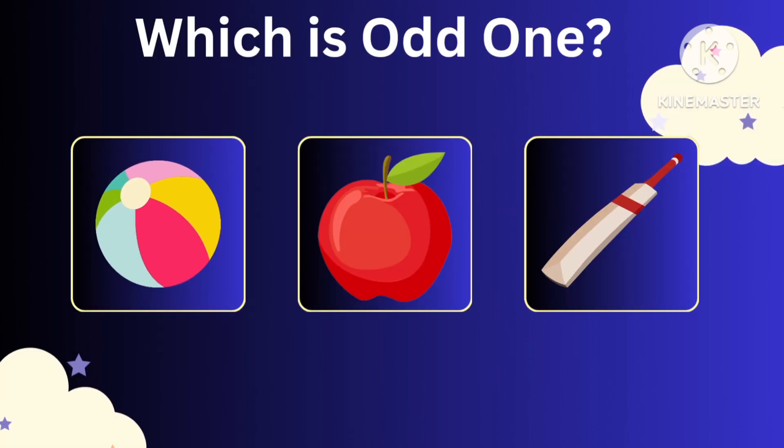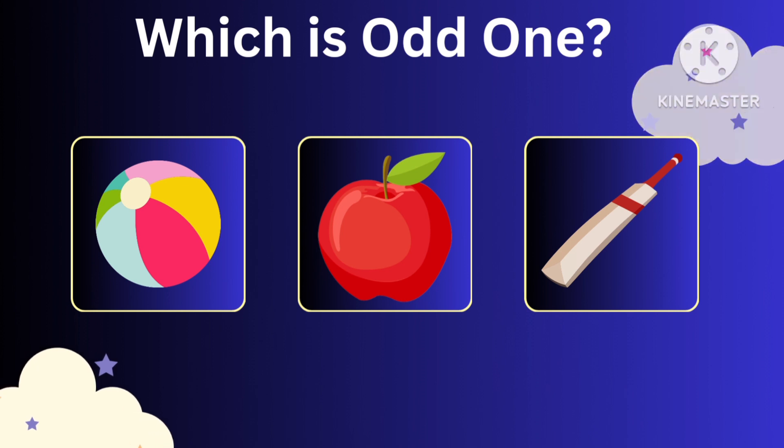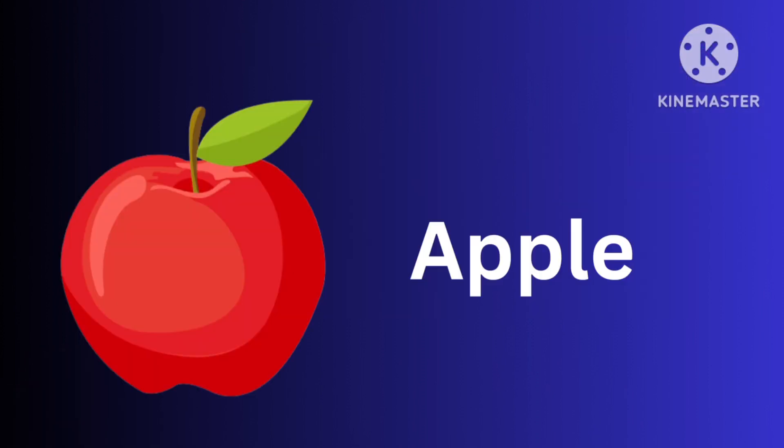Which is the odd one here? Ball, Apple, Bat. Please subscribe to Anviz Learning Lab for more interesting videos.